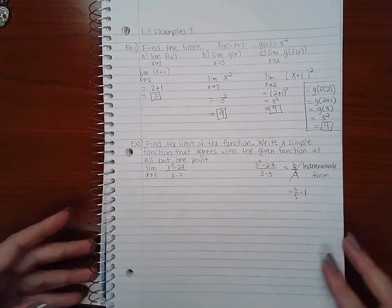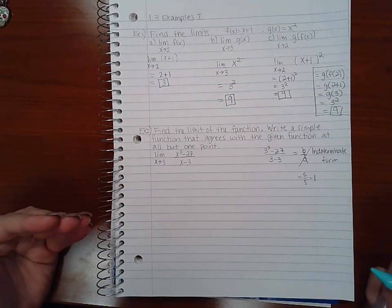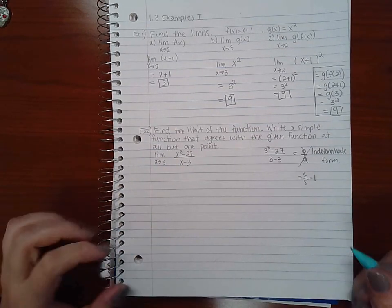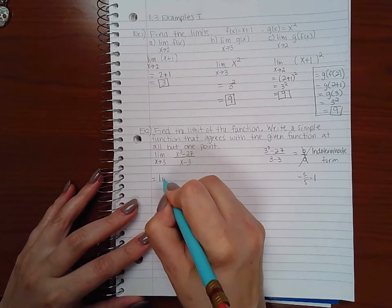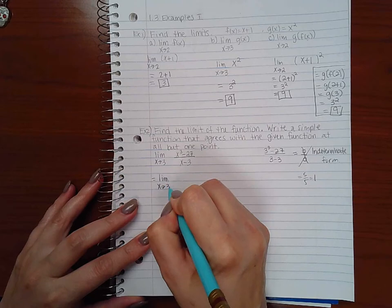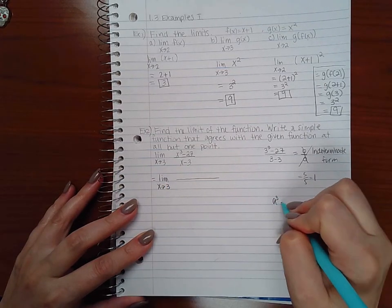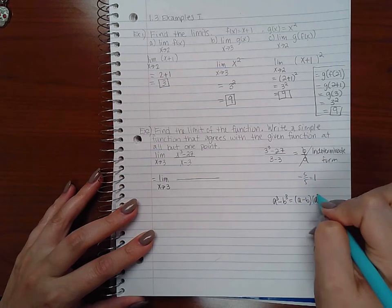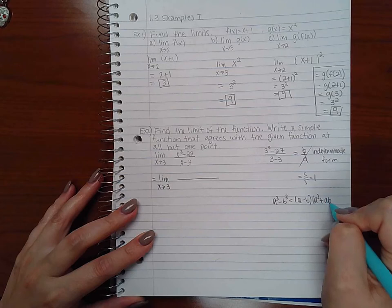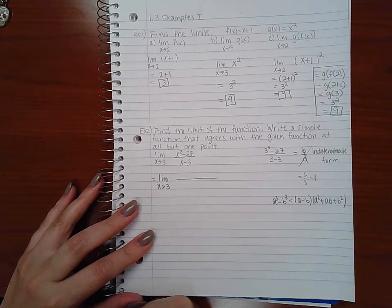So my next strategy is to try to manipulate it somehow, reduce it somehow so that then I can plug in the x equal to three. So I do know that I have a difference of two perfect cubes and I know how to factor the difference of two perfect cubes using the perfect cubes formula: a minus b, a squared plus a b plus b squared, that's the formula to factor for difference of cubes.